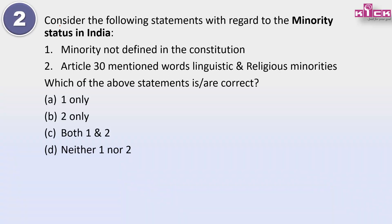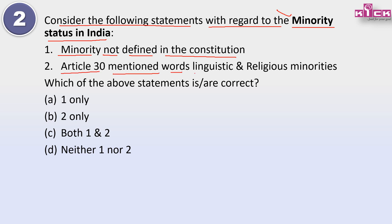Second question: Consider the following statements with regard to minority status in India. One - minority is not defined in the Constitution; the word 'minority' has no definition given in the Indian Constitution. Two - Article 30 mentions the words 'linguistic and religious minorities'. Which of both statements is or are correct? Friends, the Constitution needs to be studied this way - some factual questions come like this.